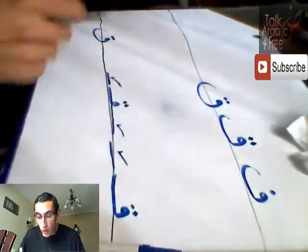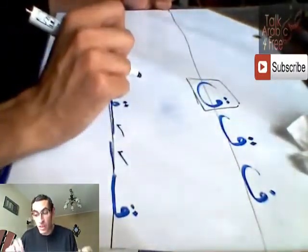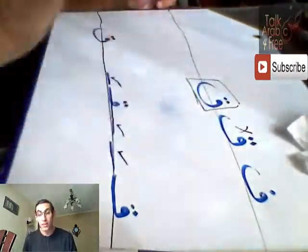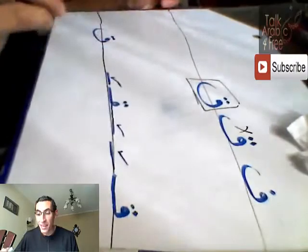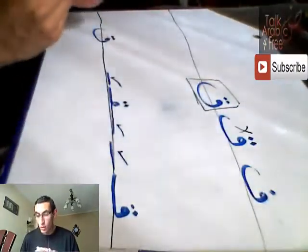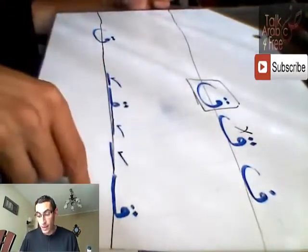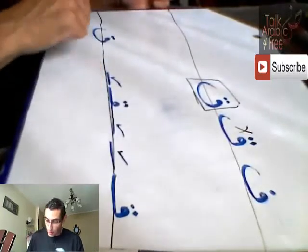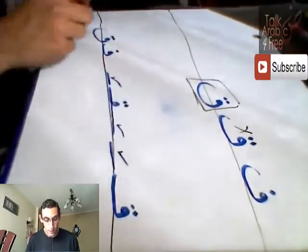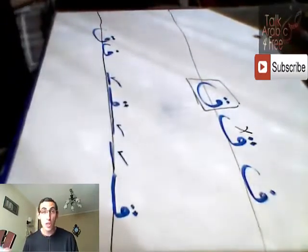This is the right way to write qaf. I didn't mention it so you don't get confused. It's all a matter of the other part going down under the line. So this is wrong and this is right. That was all - qaf and fa in the beginning, qaf and fa in the middle, and here's qaf in the end and here is fa in the end. Very simple, very easy.